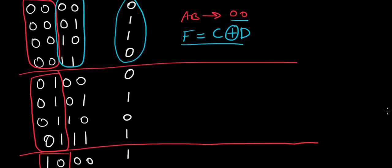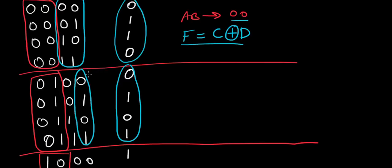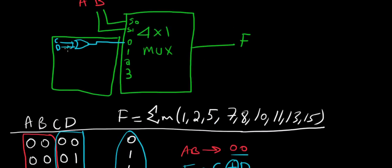Now with the second input, what we can see is that F is equal to D in this scenario. So it's easy to see: F equals D when A,B = 0,1, and this is as easy as connecting D directly to input 1.